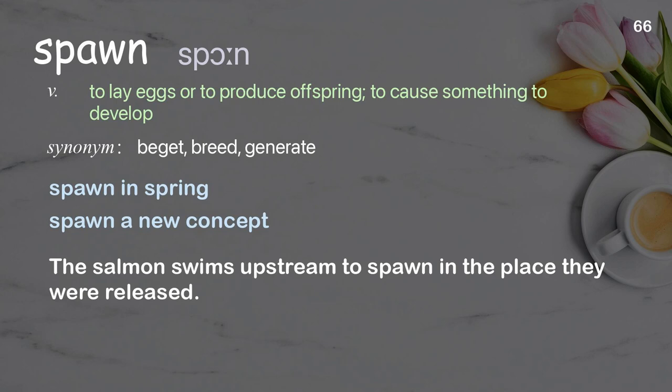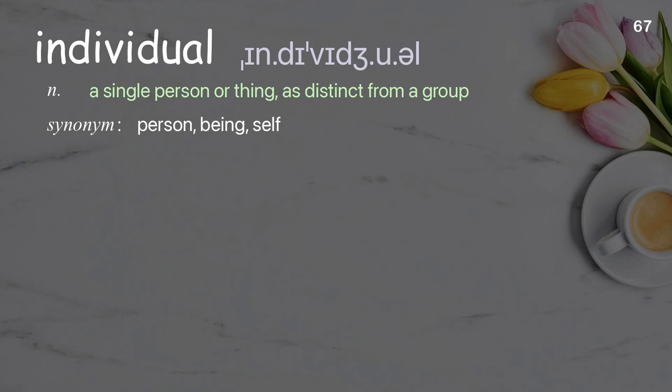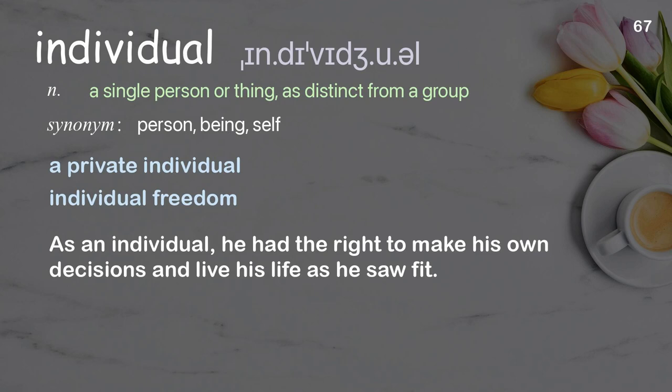Individual: a single person or thing, as distinct from a group. Examples: individual freedom. As an individual, he had the right to make his own decisions and live his life as he saw fit.